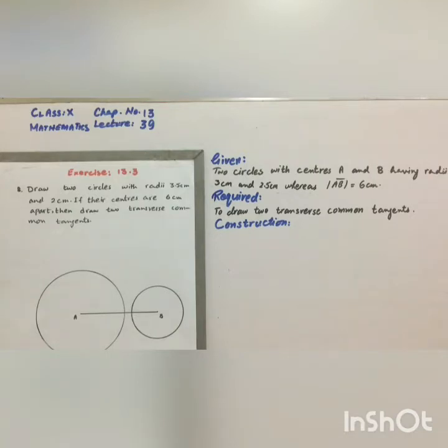We have given two circles with centers A and B having radii 3 centimeters and 2.5 centimeters, whereas distance between the centers is 6 centimeters.